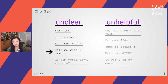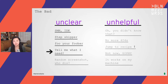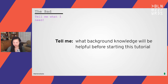The next thing that is very unclear in a lot of tutorials is something I call 'tell me what I need.' We saw this in the parody video — in the middle he says 'oh by the way, we're using Java 7.' If you've gone through something like that, you know how frustrating it is to get halfway through and realize you're missing something critical. There's no better place than the very beginning of any learning resource to tell the learner what they need.